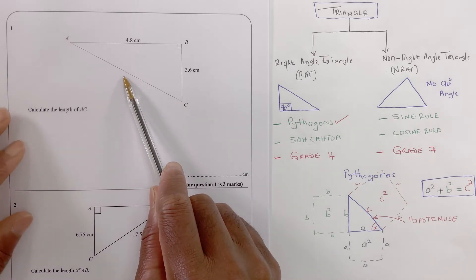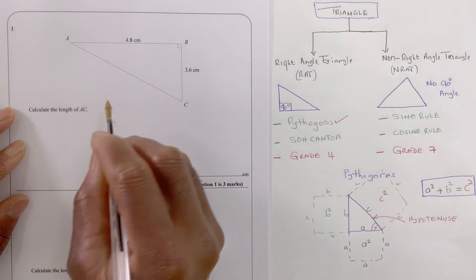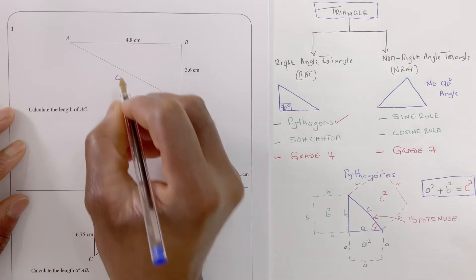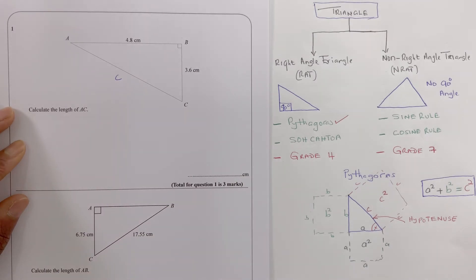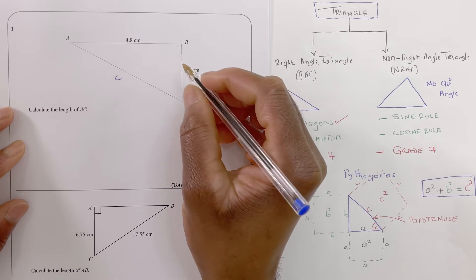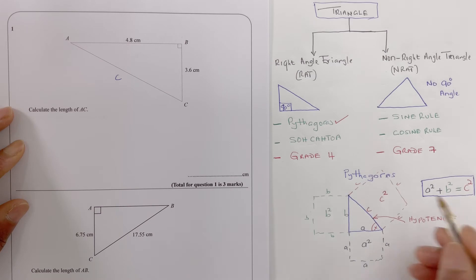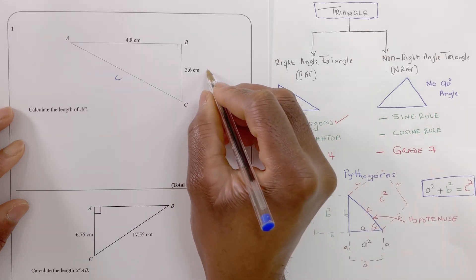your c, and any of these can be your a. Let's just call that c because it's the longest side, and we can call that a if you like, we can call that b.